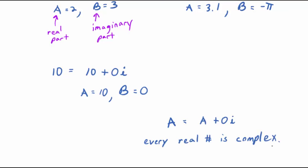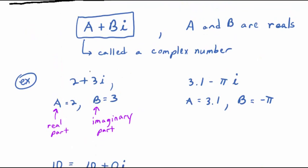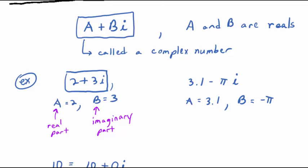Does it work the other way — every complex number is a real number? No. The first two examples of complex numbers would not be real numbers. 2 plus 3i has one foot in the real numbers (the 2) and another in the imaginary numbers (3i). So the set of complex numbers contains the real numbers.